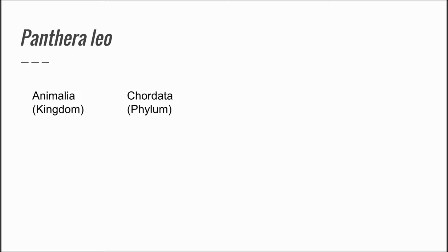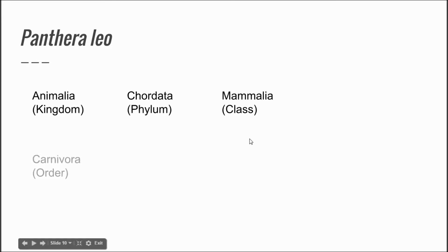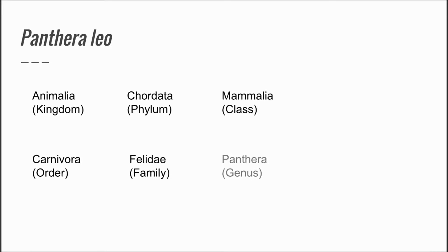Panthera leo is an example organism. It belongs to the Animalia kingdom, the Chordata phylum, the Mammalia class, the Carnivora order, the Felidae family, and the Panthera genus. Its species is Panthera leo.